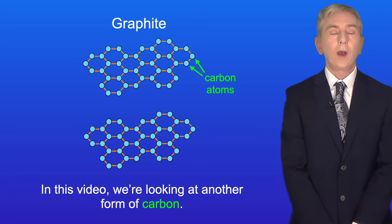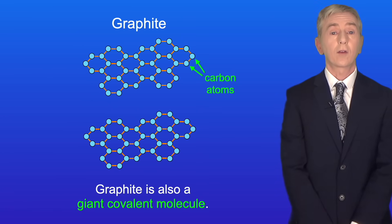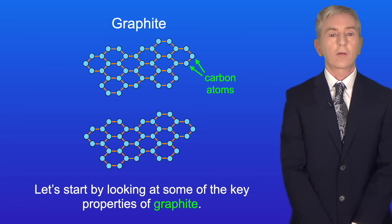In this video we're looking at another form of carbon. This is called graphite and graphite is also a giant covalent molecule. Let's start by looking at some of the key properties of graphite.